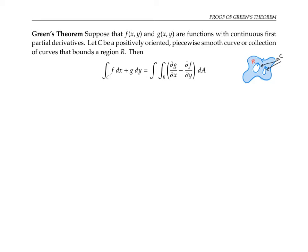Piecewise smooth means that my boundary curves can be broken up into finitely many pieces, such that each piece can be parameterized by some r(t) giving the x and y points on the curve, such that r'(t) exists and is never zero. Under these conditions, Green's theorem says that the line integral over curve C of f dx plus g dy equals a related double integral, where we integrate the partial of g with respect to x minus the partial of f with respect to y over the region R bounded by the curves.